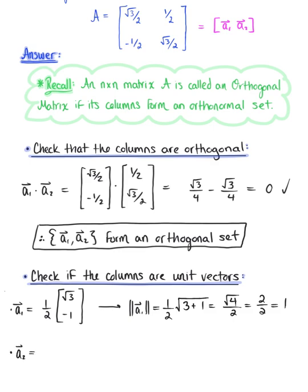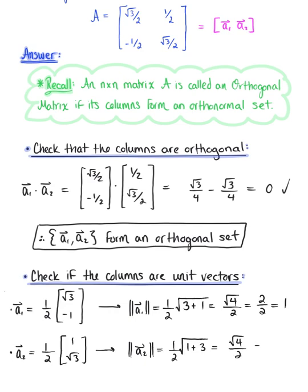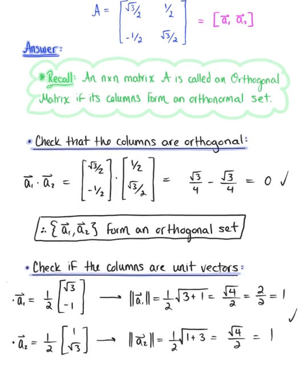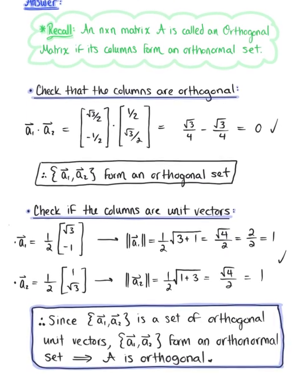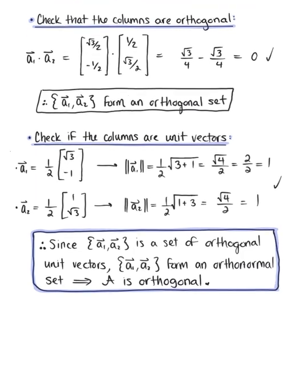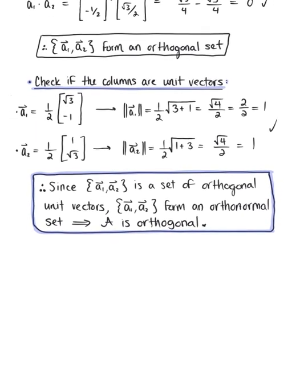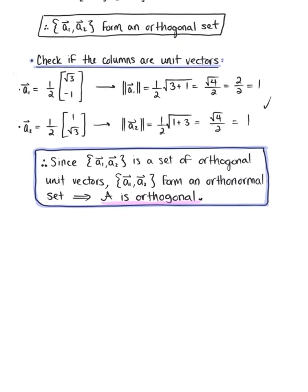For the second column vector a₂, again I'm going to pull the scalar multiple of one half out in front, multiplied by the vector (1, √3). Finding the length of this column vector, we keep the scalar multiple of 1/2 in front, multiplied by the square root of 1² + (√3)², which is 1 + 3 = 4. Again we have √4 over 2, which equals one. So we can say that the set {a₁, a₂} is not only an orthogonal set, but it also forms an orthonormal set, which tells us that matrix A is orthogonal.